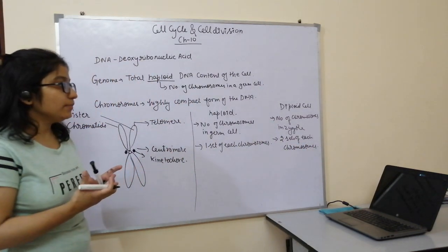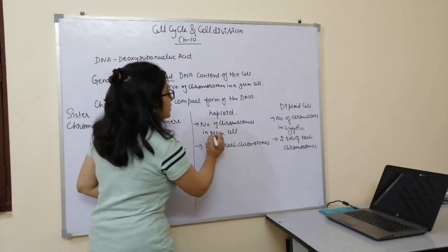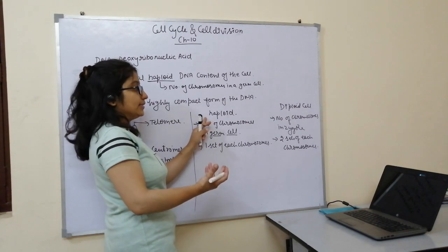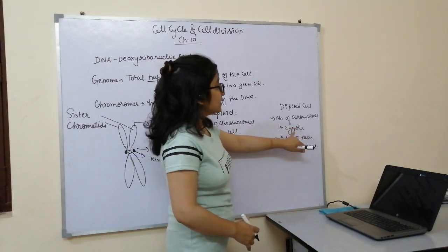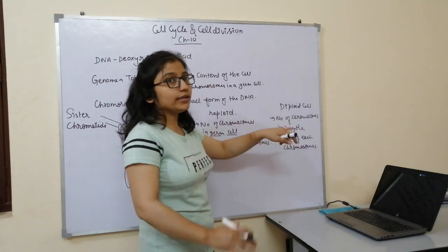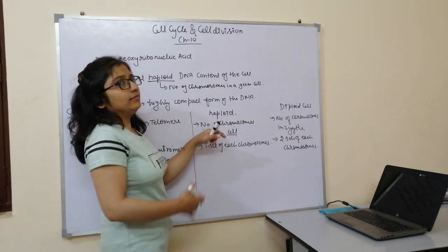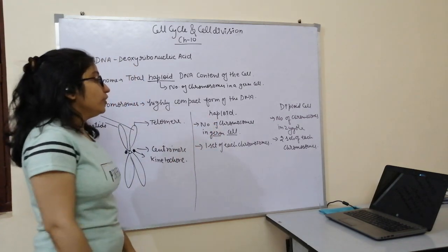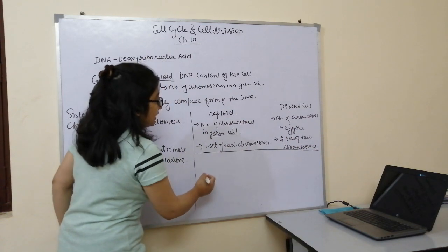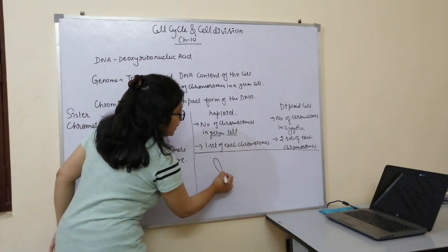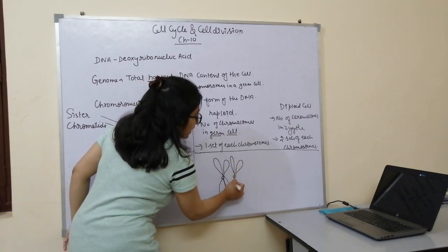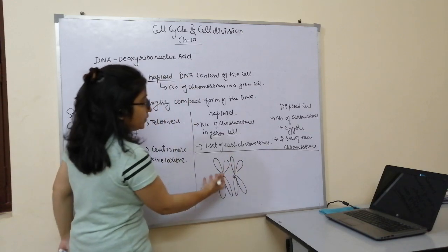Germ cells are always haploid, and the zygote is universally diploid. The zygote can never be haploid, and a germ cell can never be diploid. In a diploid cell, we have two sets of each type of chromosome — if one chromosome looks a certain way, its partner chromosome will look the same.